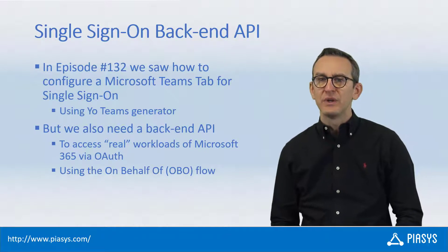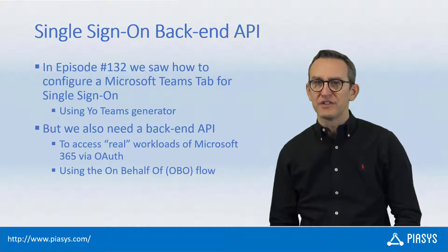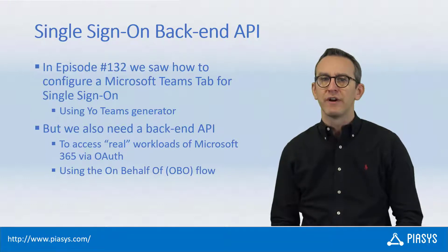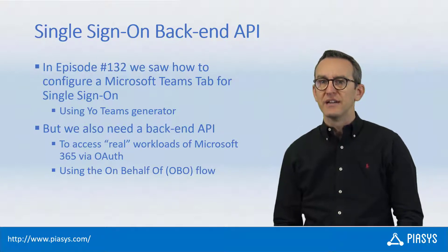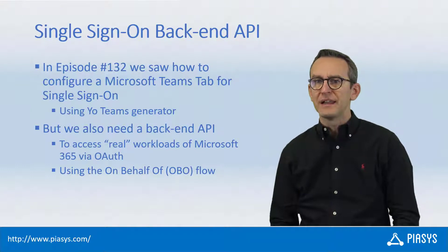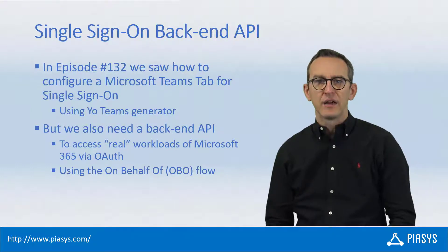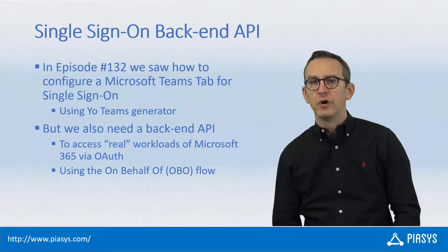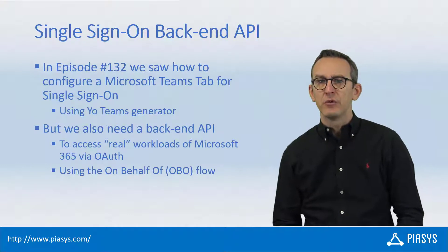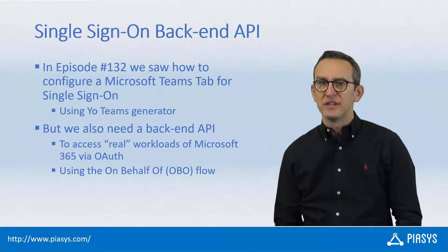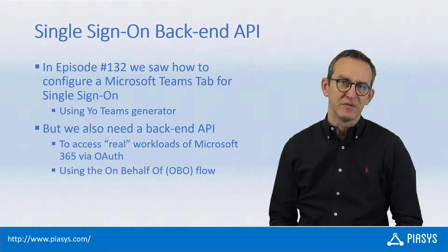Last week we saw that we can easily create, using the Yo Teams generator, a Teams tab or a Teams task module which can leverage the single sign-on capability provided by the Microsoft Teams client out of the box. But we also saw that in order to consume any backend API in a secure way, like for example Microsoft Graph, we need to leverage the on-behalf-of flow in the backend API that we will have to create and provide backing the Teams tab or the Teams task module that we create with the Yo Teams generator.